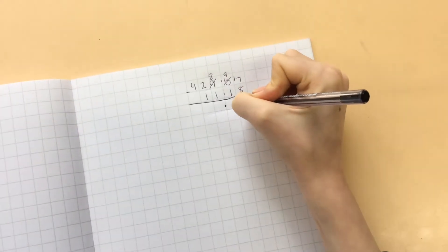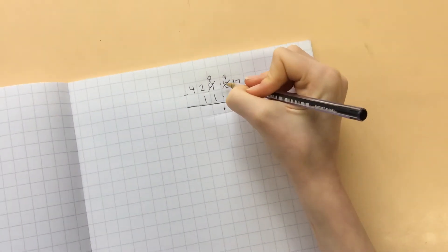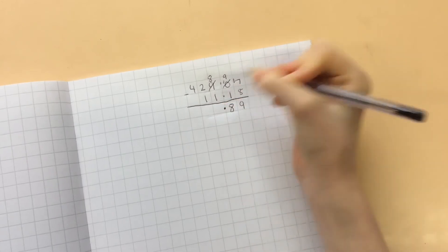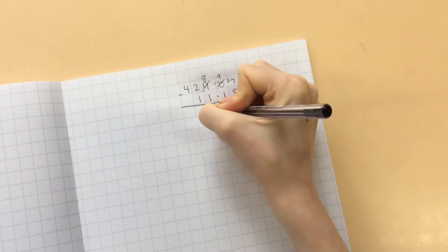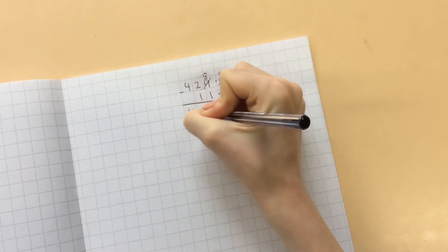Now I have 17 hundredths take away 8 hundredths, which is 9 hundredths. Then I do 9 tenths take away 1 tenth, which is 8 tenths. That's my answer.